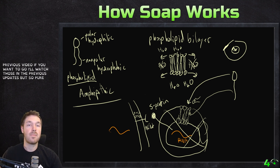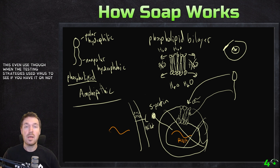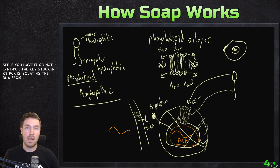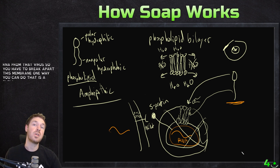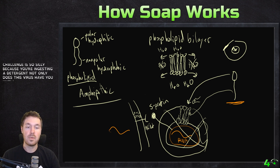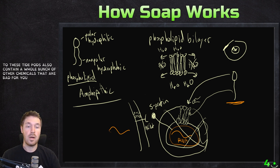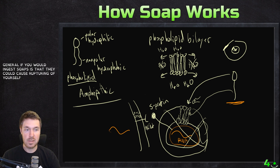I went over that whole process in previous videos if you want to watch those. But soap breaks apart the virus, gets out the RNA. This is an important technique — one of the testing strategies used for the virus to see if you have it or not is RT-PCR. The key step in RT-PCR is isolating the RNA from that virus, so you have to break apart this membrane. One way you can do that is a solution containing detergent. This is also why the Tide Pod challenge is so silly, because you're ingesting a detergent. Not only does this virus have a cell membrane made of phospholipids, every cell in your body also does, so you're also risking rupturing all your cells.